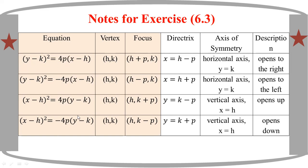y squared is equal to 4ph. The form (y minus k) whole square is equal to 4ph into (x minus h). Also, x minus h whole square is equal to 4ph into (y minus k).